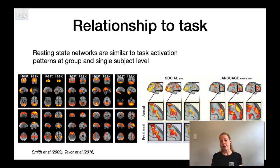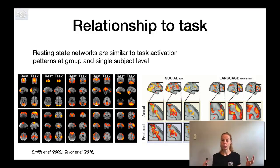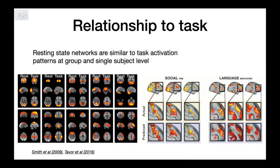Another key feature of resting state is its relationship to task. This principle has been extended from the BISBL study. For example, a study at the bottom left shows similarity between resting state networks and task activation networks across many different brain regions. The figure on the right actually tries to use resting state spatial maps at an individual subject level to predict task activation maps within an individual — and you can see that it does a really good job at that.